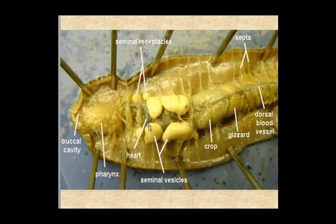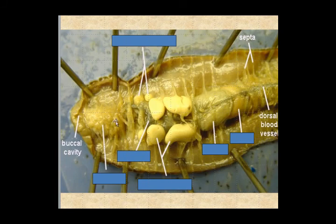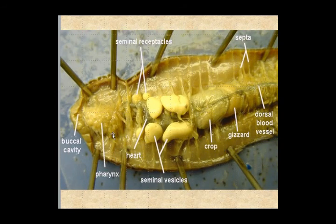Pseudo hearts, or aortic arches, are these little enlarged vessels of contractile muscle tissue. You can't see them very well here, but they actually do rhythmically pump.